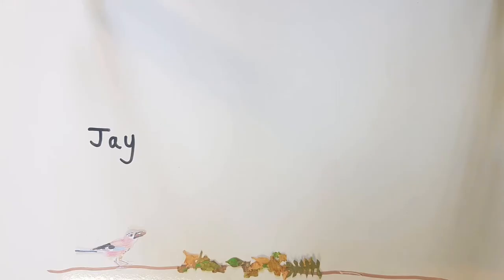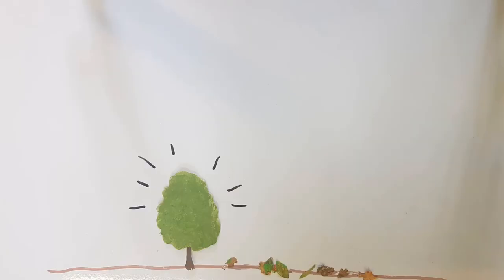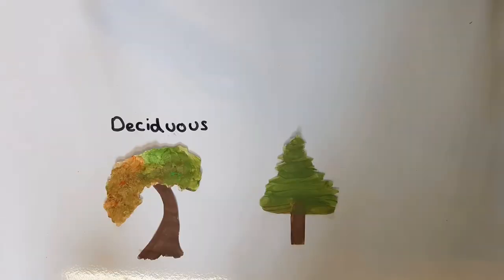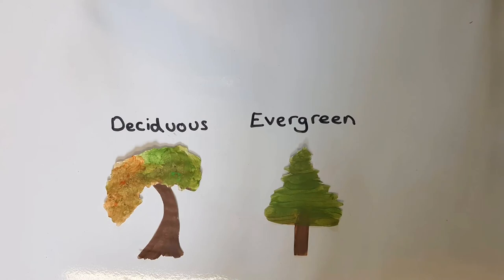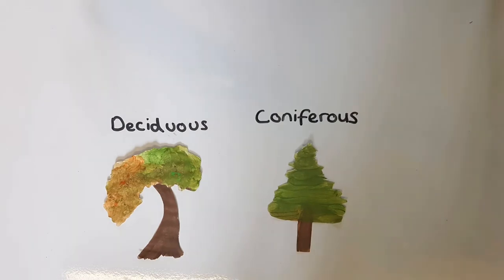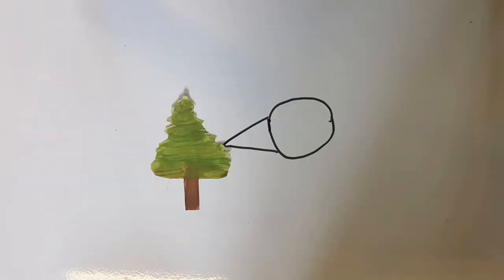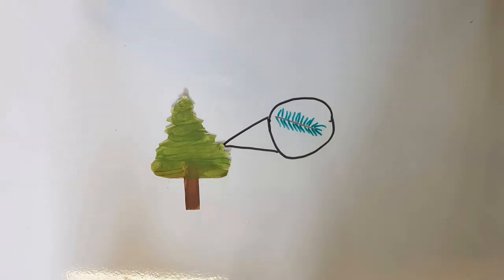Jays plant acorns to store them underground for winter, but sometimes they forget where they are — and so oak trees grow. Trees in woodlands can be either deciduous or evergreen. Evergreen trees can also be called coniferous.